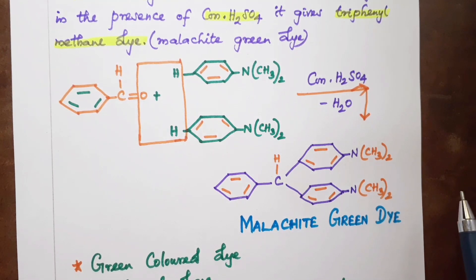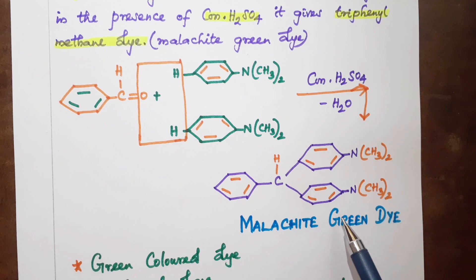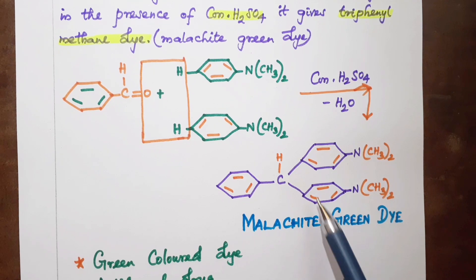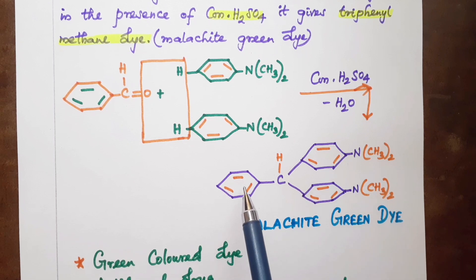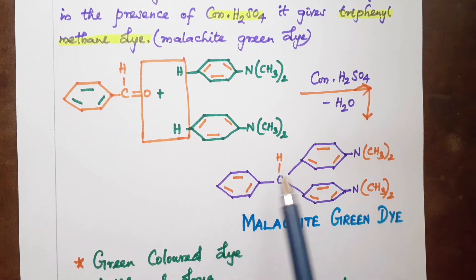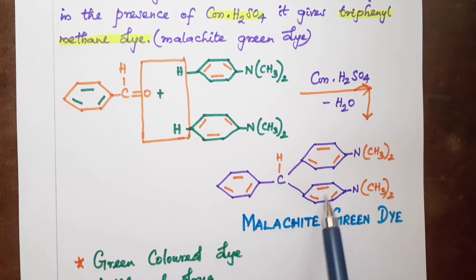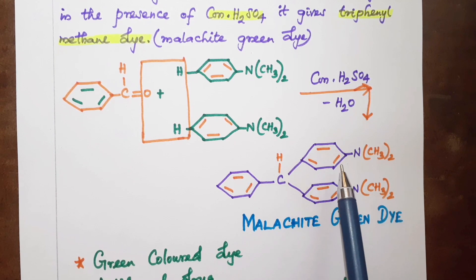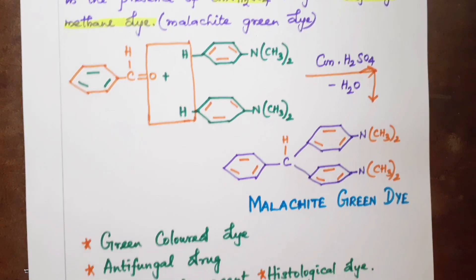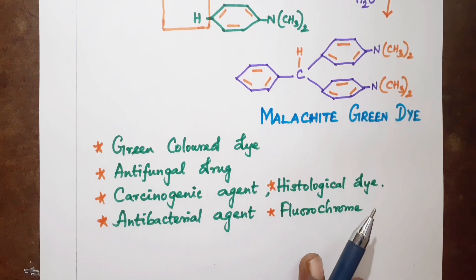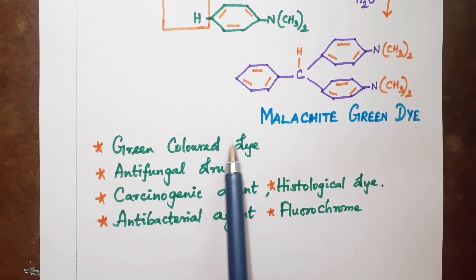The product is malachite green. The name of the compound is malachite green, and it is a triphenylmethane dye. This compound is a green color dye.